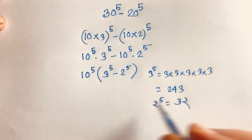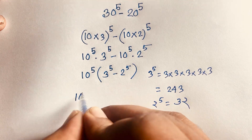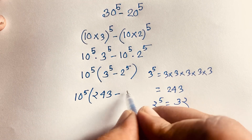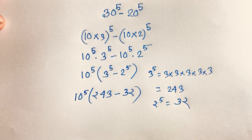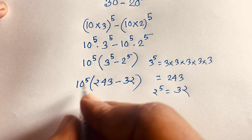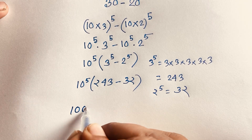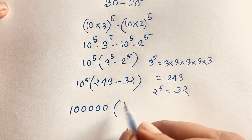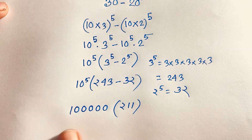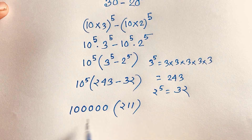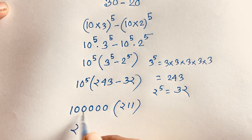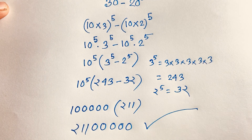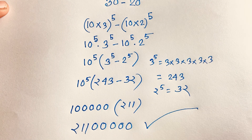So in this expression, 10 to the power 5 — which is 100,000 (1 followed by 5 zeros) — times (243 minus 32), which equals 211. So this gives us 211 followed by 5 zeros. This is our final answer for this exponential expression.